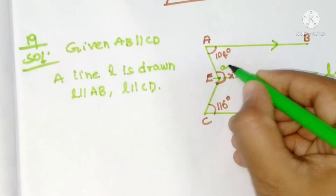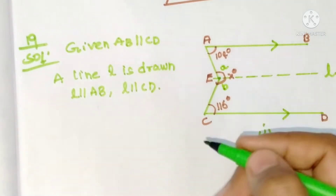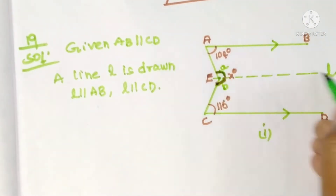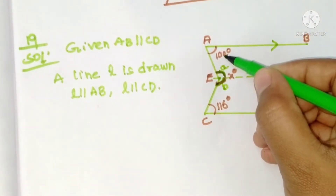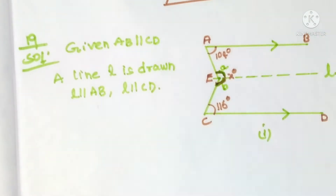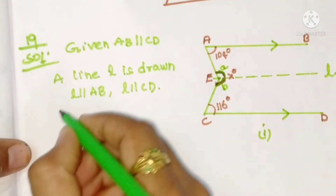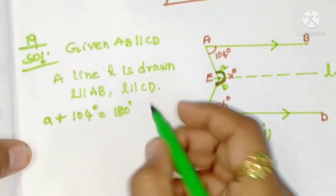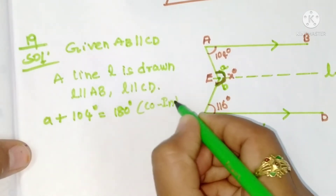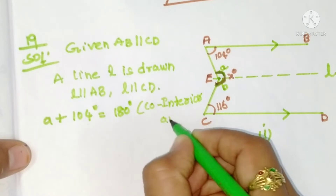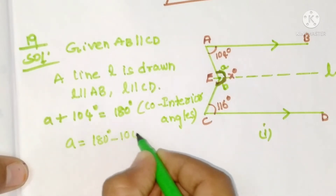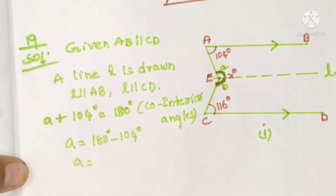AE acts as a transversal. The angle on one side is a and the other is b. These two lines are parallel and AE acts as a transversal. Now a and 104 degrees are co-interior angles, so they are supplementary: a plus 104 degrees equals 180 degrees. The reason is co-interior angles.